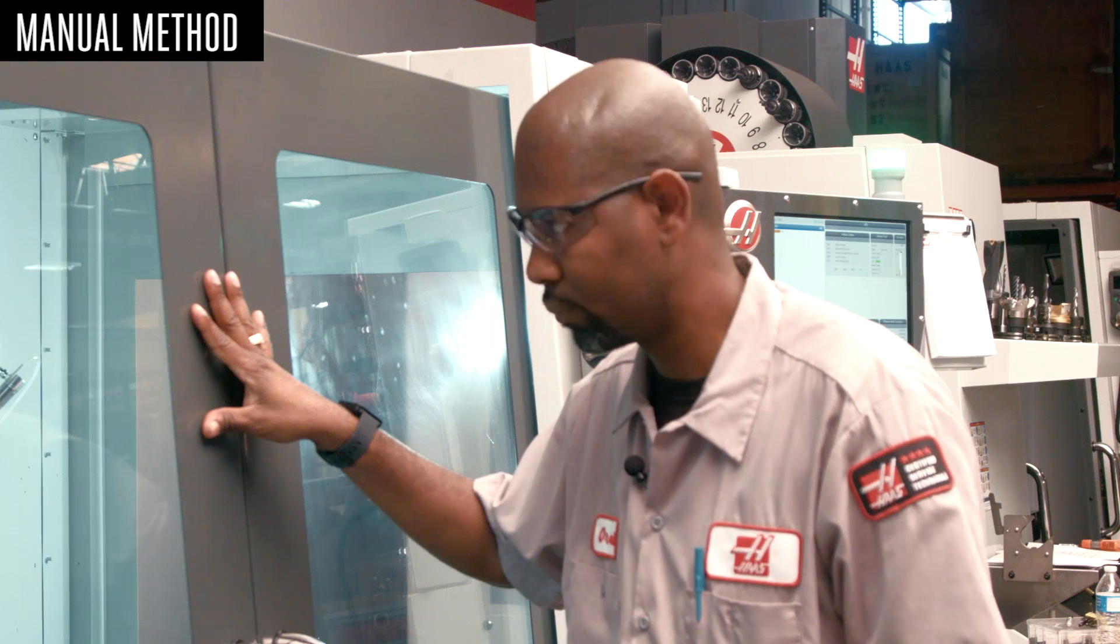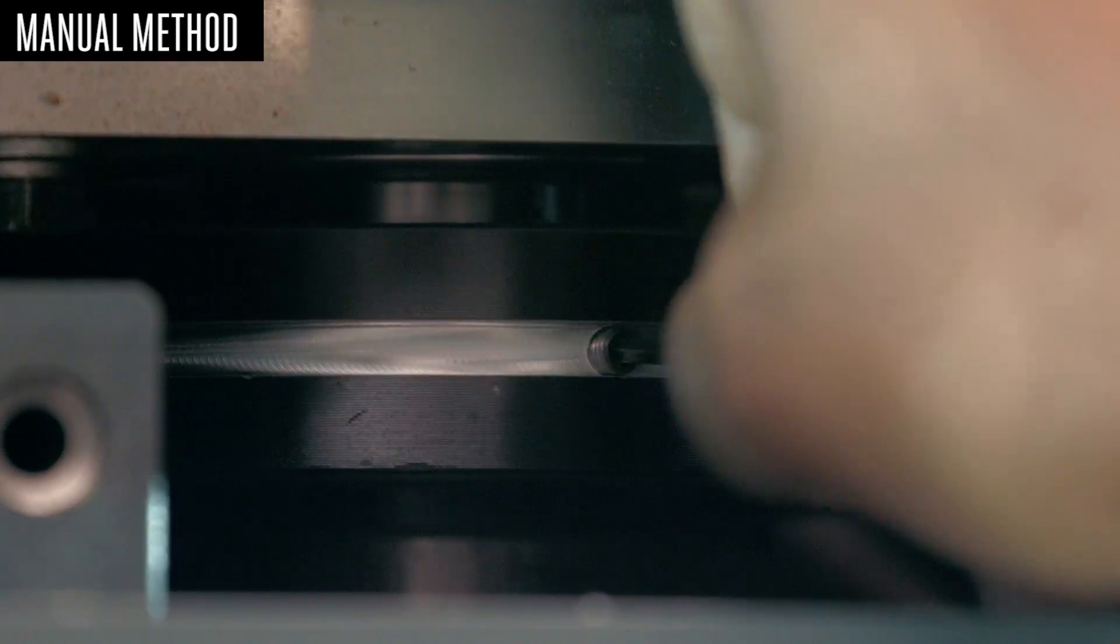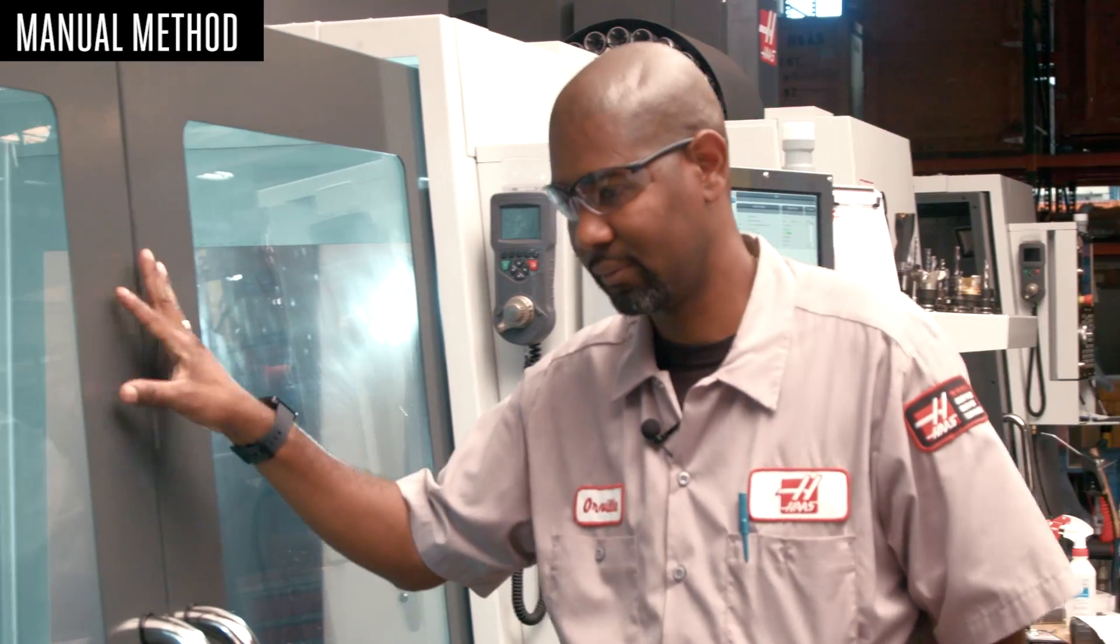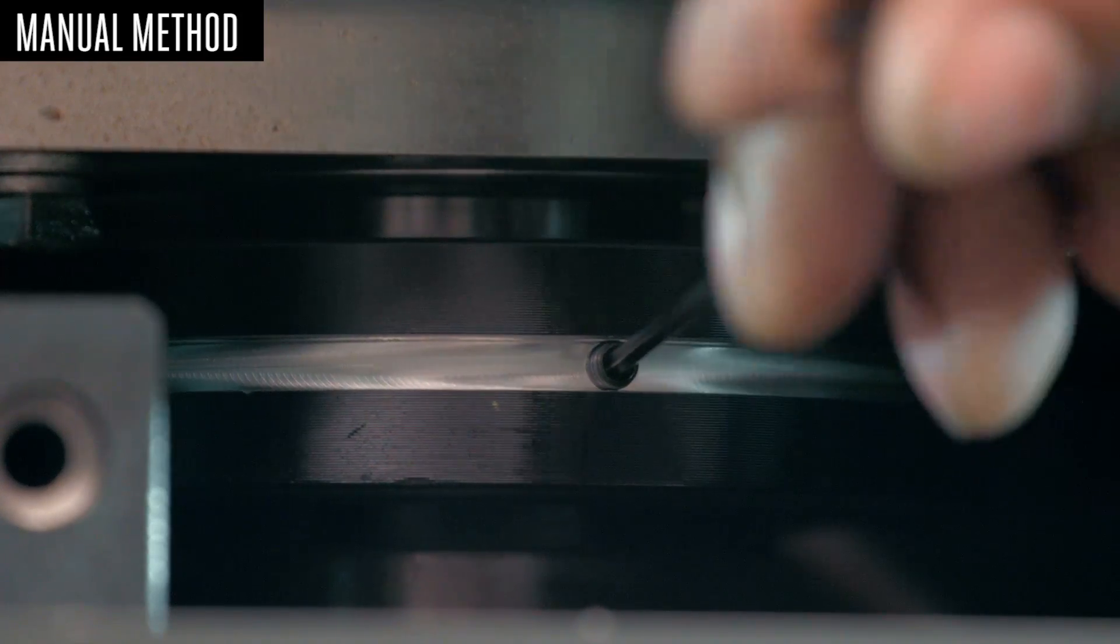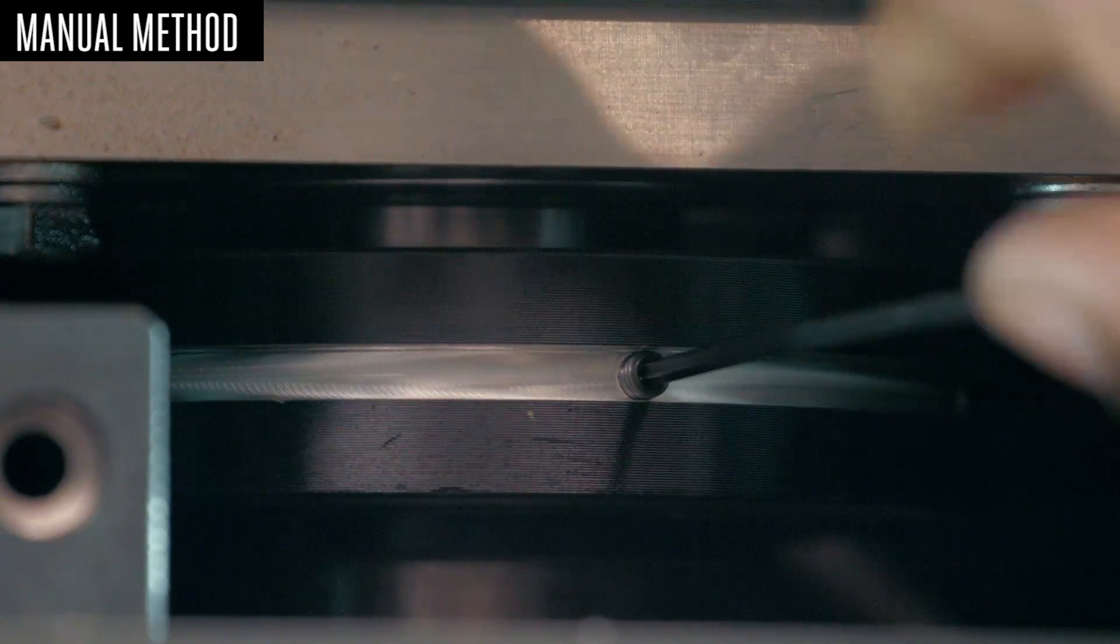If you don't notice any change, then repeat the same step with the next larger set screw. Once you find the hole and set screw that makes an improvement, then try adding additional weight to the same hole. Don't allow the set screw to stick out past the side of the guide release ring.